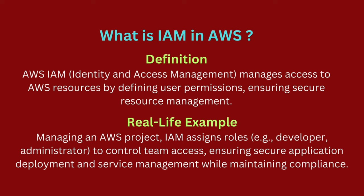For example, in an AWS project, you use IAM to create user accounts for developers and assign permissions based on their roles, such as developer or administrator. Developers can deploy applications, while administrators have wider access to manage AWS services. This setup ensures each team member has appropriate access levels, maintaining security and compliance with organizational policies.